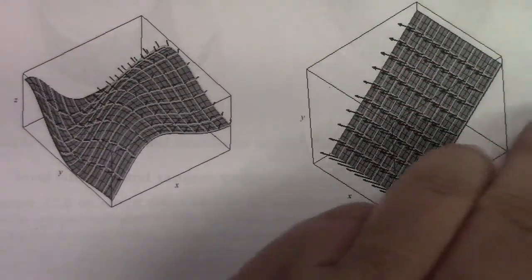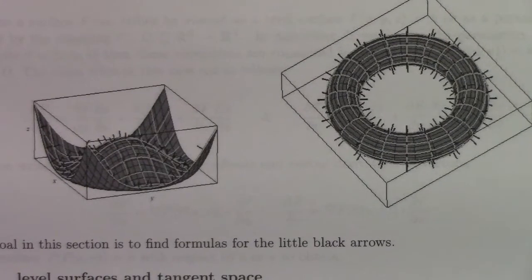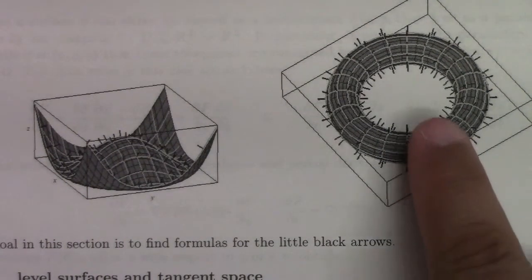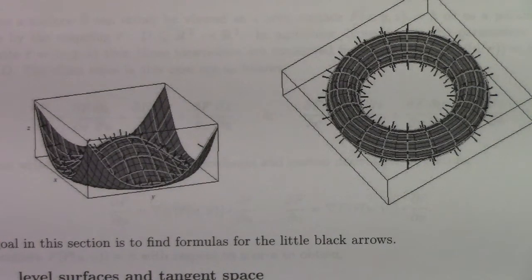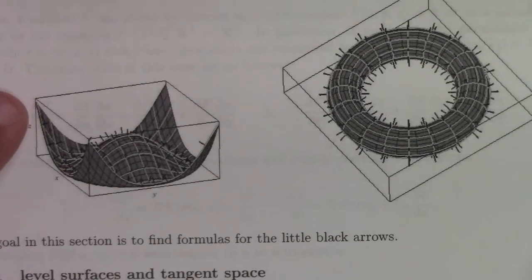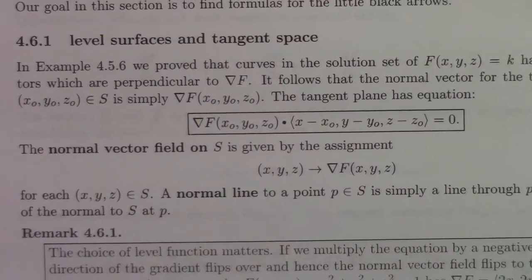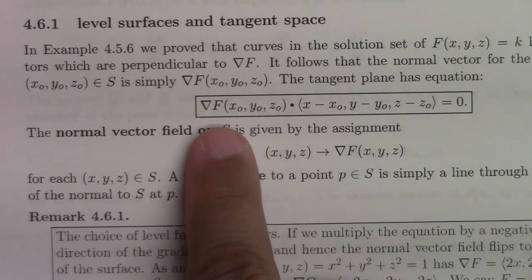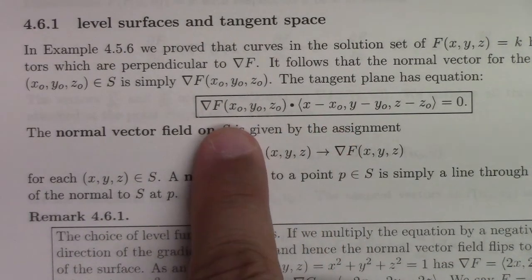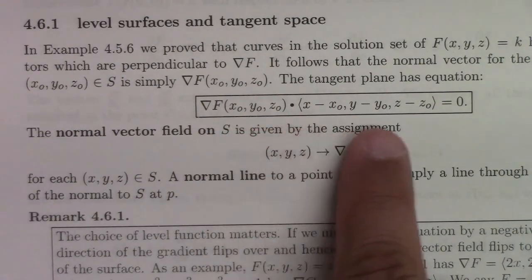We'll need different techniques for different kinds of surfaces. We already know how for a level surface: if we calculate the gradient of the level surface, that gives us the normal vector field. The tangent plane at the point (x₀, y₀, z₀) for the level surface f(x,y,z) = k is given by the gradient evaluated at the point dotted with the difference vector. Note that the choice of normal vector is not unique — you could point either up or down.